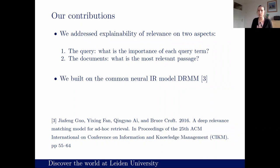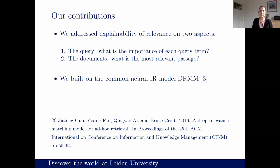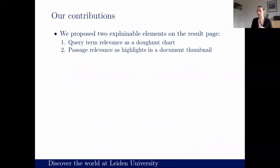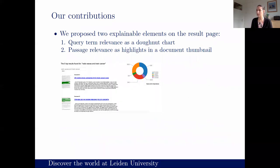We build on this and address explainability in two aspects. First, at the level of the query: can we show the user the importance of each query term in the ranking? Second, at the document level: can we indicate in the full document what the most important passage was? We used a commonly used neural model — the DRMM, the Deep Relevance Matching Model — which has been shown to be effective for ad hoc retrieval, and whose architecture allows us to extract these explainable items.